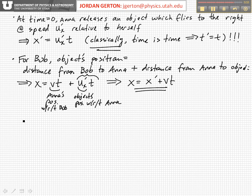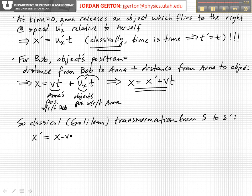So the classical, or Galilean transform, the transformation then from S to S prime is given by what we just wrote down for x, although we've inverted it now.